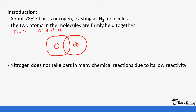Every covalent bond represents a pair of shared electrons, so the first pair is shared, then the second, then the third. Each nitrogen atom contributes three electrons since they require three electrons to be completely full. Two electrons are left as lone pairs on each atom — two here and two here. This is how the nitrogen molecule looks.